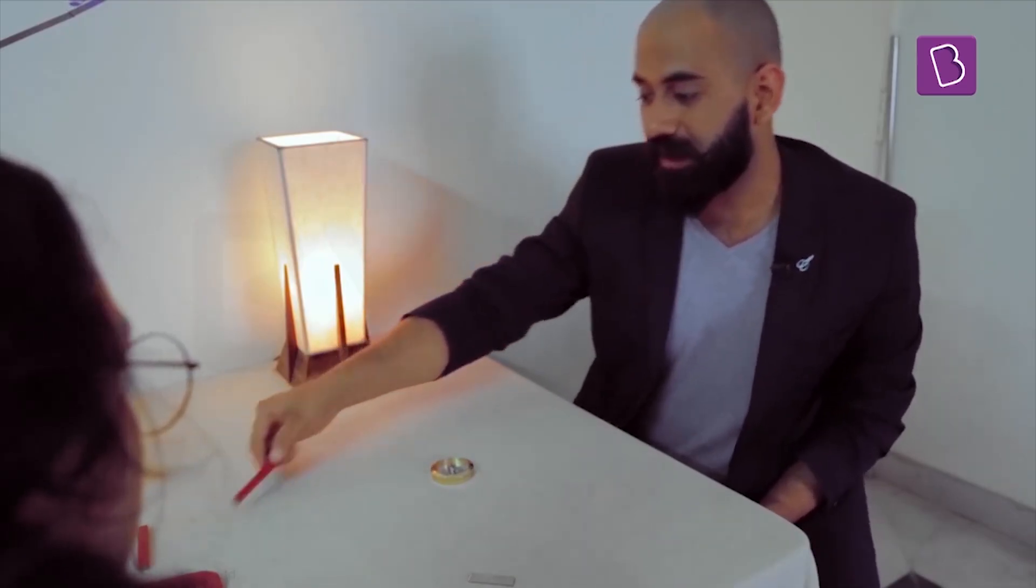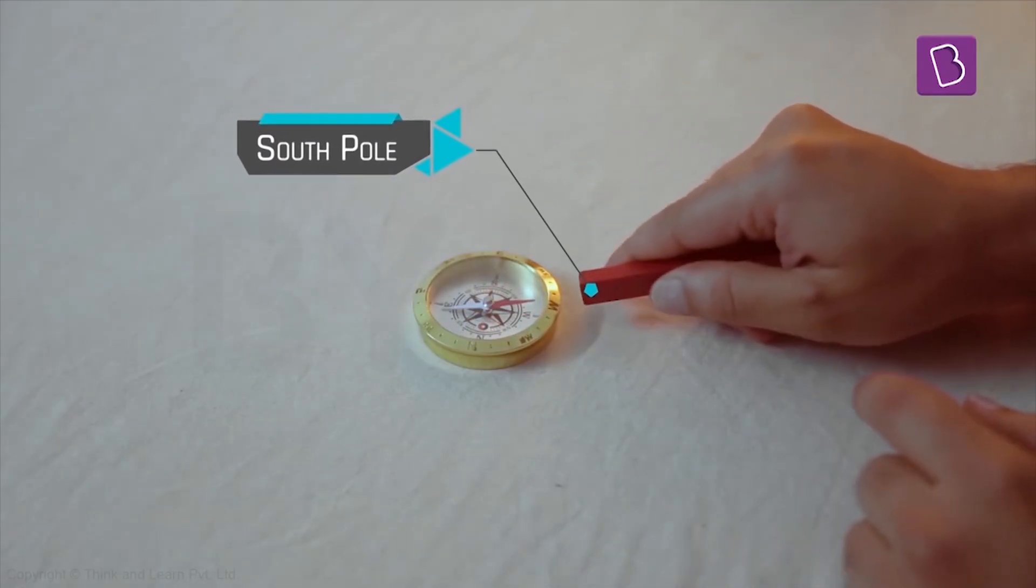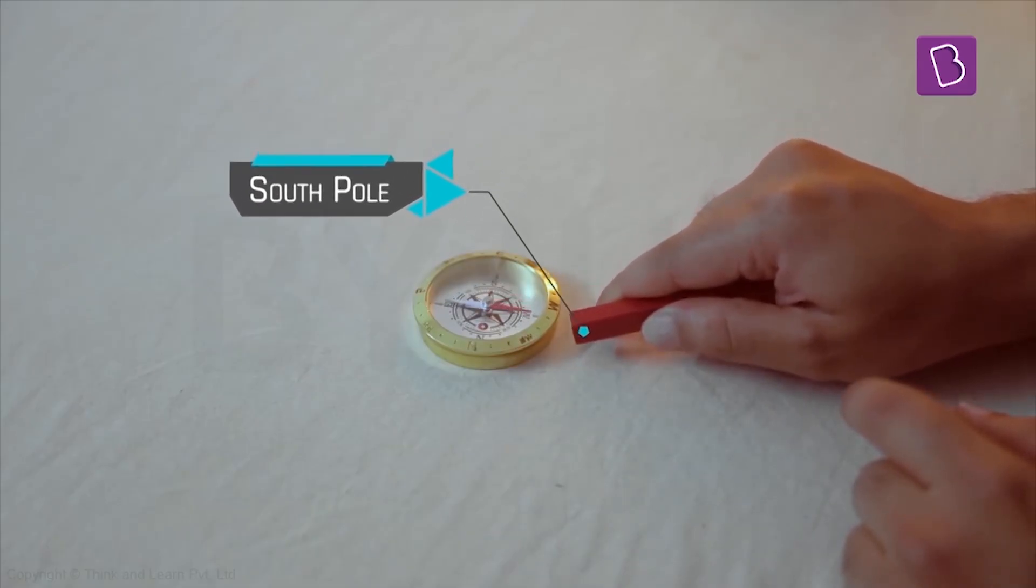To prove that it's a magnet, let me take another magnet. Say I'll show you, I'm taking a south pole. You see that immediately it gets attracted and it moves along with this.